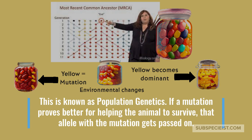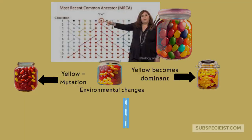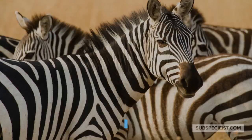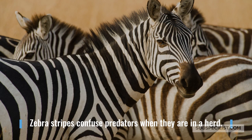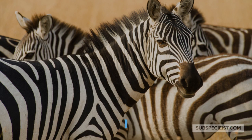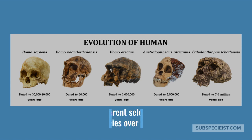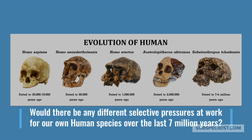This is known as population genetics. If a mutation proves better for helping the animal to survive, that allele with the mutation gets passed on. The quagga is the ancient ancestor of all zebras living today, going back 7 million years. Zebra stripes confuse predators when they are in a herd. An archaic zebra descendant of the quagga with more stripes would be better adapted to survive and would have a leg up in the zebra mating pool.